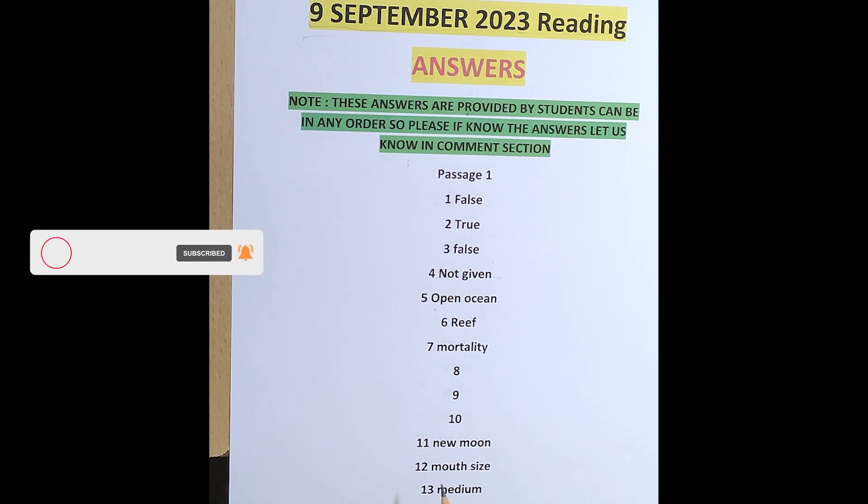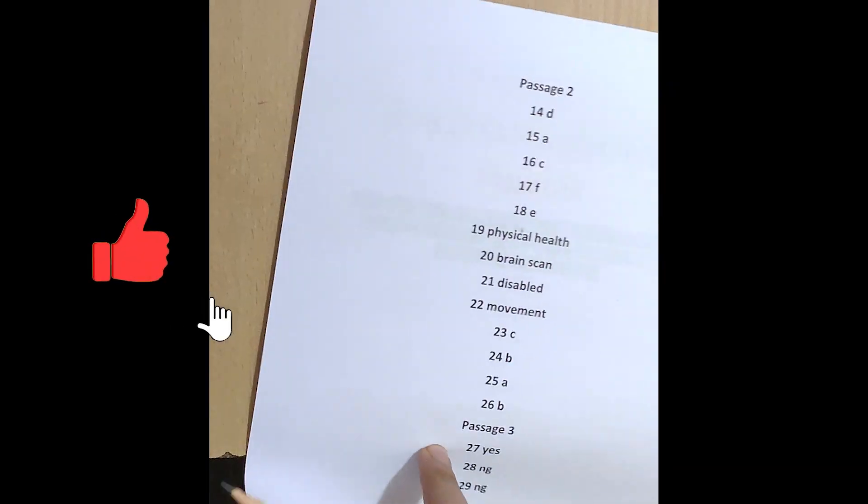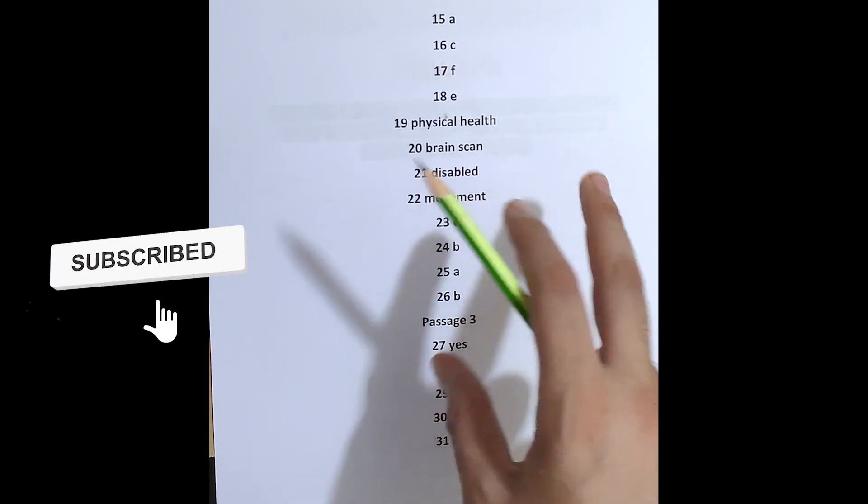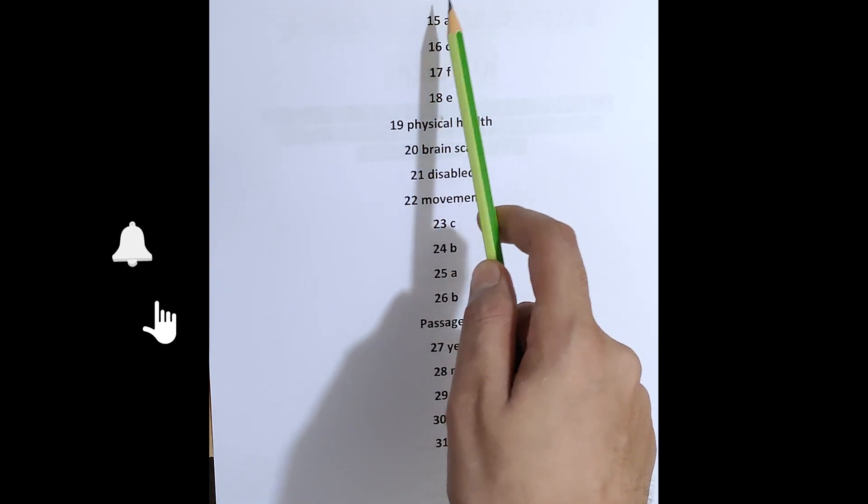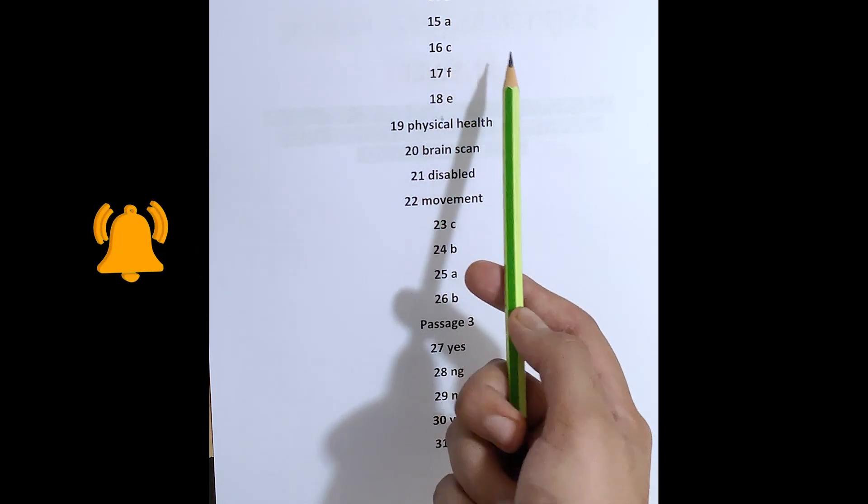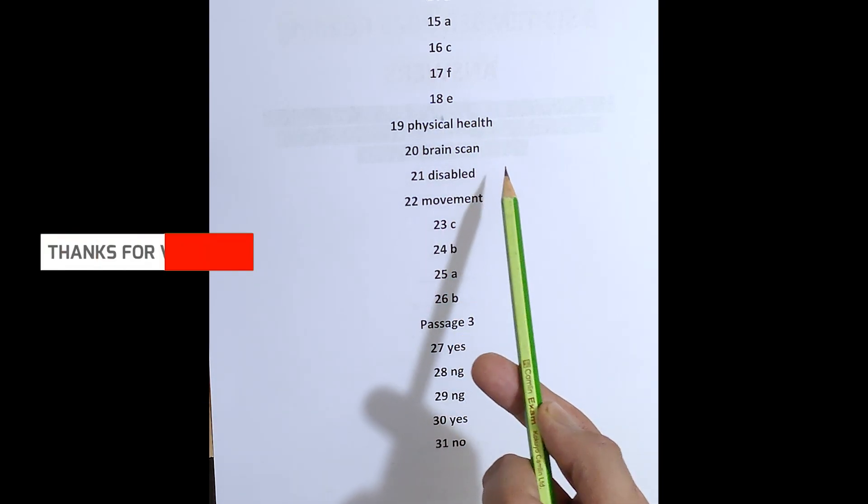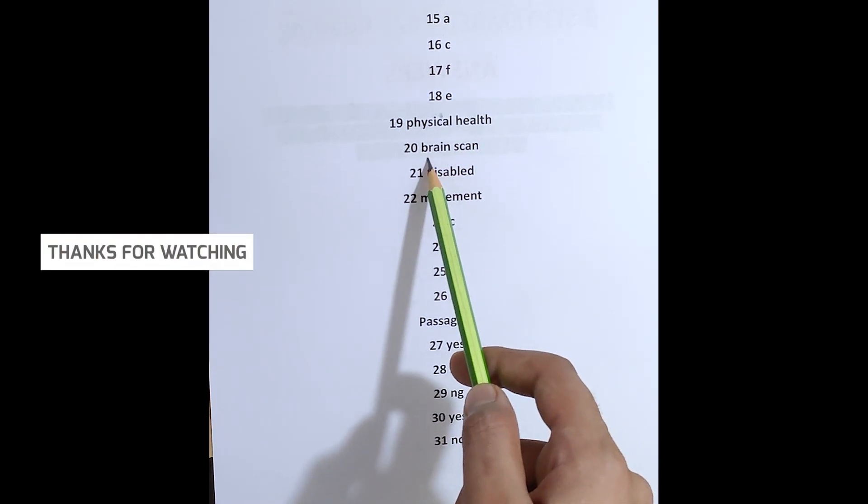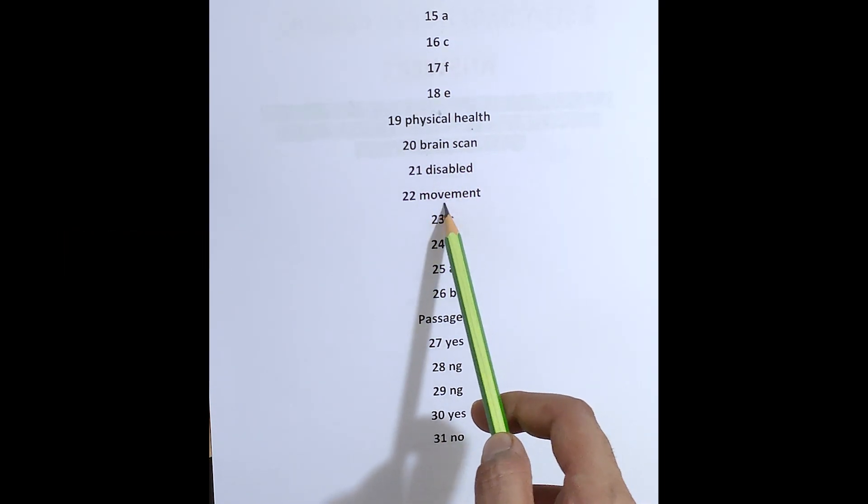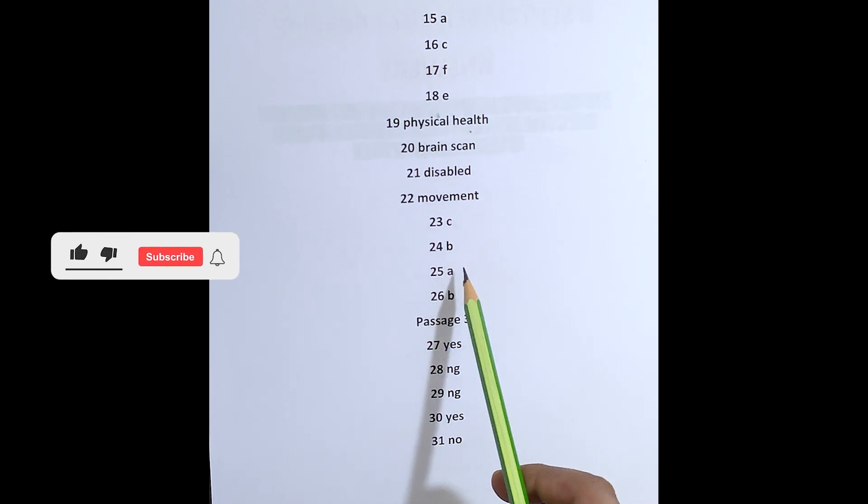New Moon Mouth Size Medium. 14th Ka D, 15th Ka A. C F E. Physical Health Brain Scan Disabled Movement C B A B.